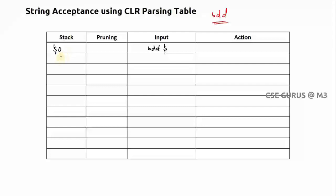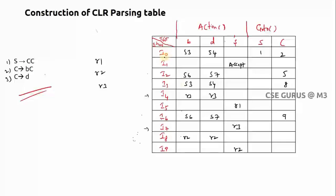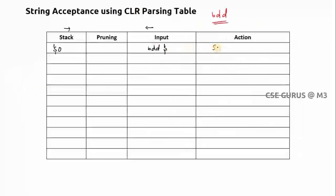You need to consider the rightmost symbol in the stack and the leftmost symbol in the input. The rightmost is I0 and the leftmost input symbol is B. Check the parsing table: I0 to B is S3. S means shift, so we shift B. The stack becomes: dollar 0 3, and the remaining input is DD dollar.